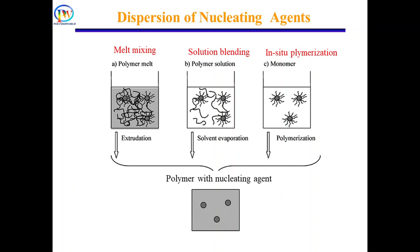Nucleating agents are added into the polymer matrix via melt mixing, solution blending, or in-situ polymerization. In melt mixing, polymer and nucleating agents are mixed together at a temperature higher than the melting point of the polymer. In solution blending, the polymer is dissolved in a solvent and the nucleating agent is added. In in-situ polymerization, the polymer is synthesized from its monomer and during the polymerization reaction the nucleating agent is added.